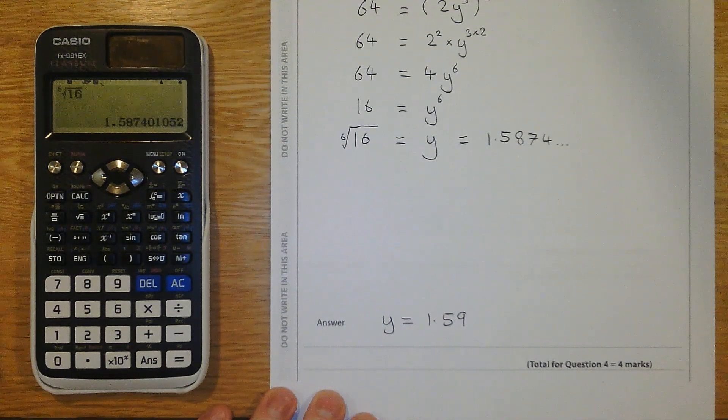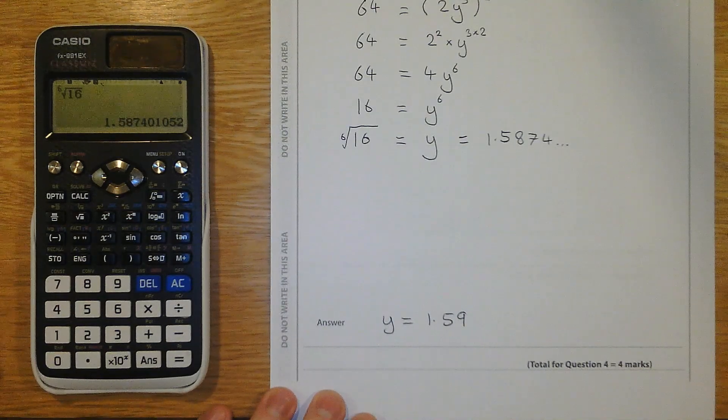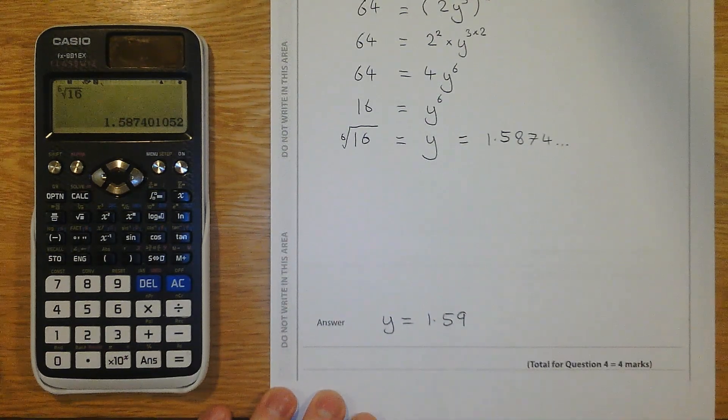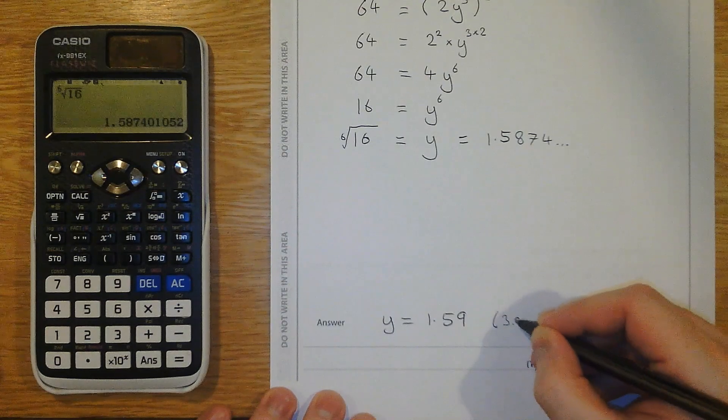So I'm going to move to the bottom of the page where the answer box is. And my final answer for y will be y equals 1.59. Now, we're not given any units for y. So we don't have to worry about that. But we still should say how we've rounded it.